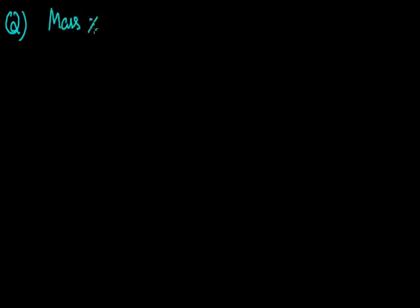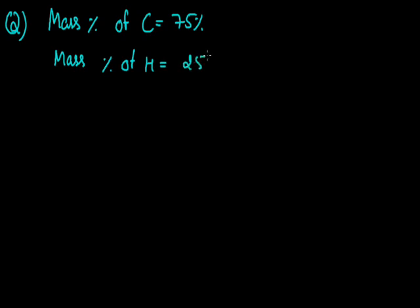Now let's apply these steps with an example. A compound contains carbon and hydrogen. The mass percentage of carbon is 75% and the mass percentage of hydrogen is 25%. With the help of these two given percentages, we are asked to calculate the empirical formula of the compound.